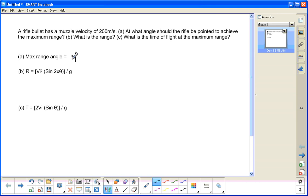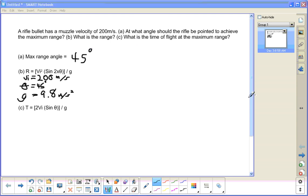The maximum range angle is always 45 degrees. The givens are initial velocity, which is 200 meters per second, theta, which is 45 degrees, and gravity, which is the same thing as acceleration, which is 9.8 meters per second squared.